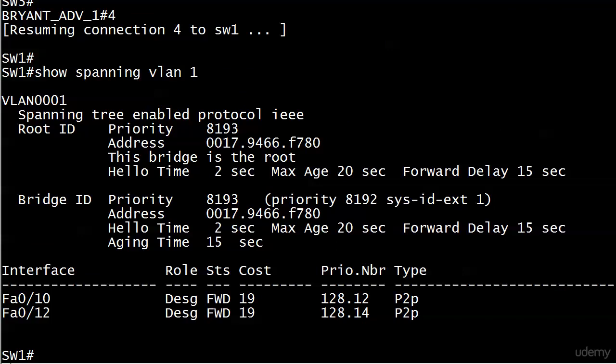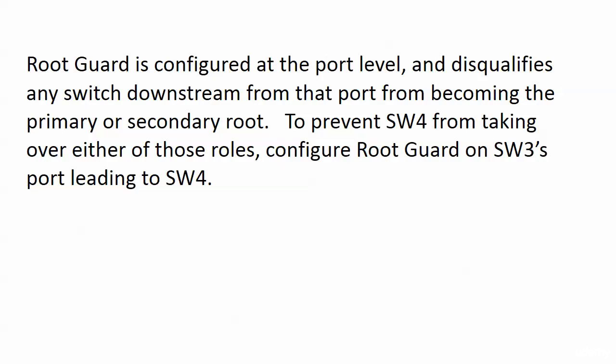Root guard prevents another switch downstream from the configured port from becoming the primary or secondary root. It's important to note that root guard is configured at the port level. With root guard — unlike port security where a violation puts a port into error-disabled state and shuts it down — that is not always the case with switching features including root guard. Pay special attention to what actually happens to the port when there is a root guard violation.